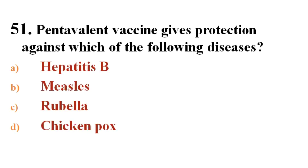Next question: Pentavalent vaccine gives protection against which of the following diseases? Options A. Hepatitis B, B. Measles, C. Rubella, D. Chickenpox.